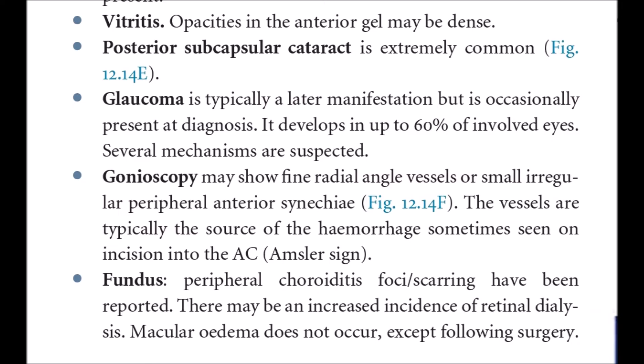Vitreous opacities in the anterior gel may be dense. Posterior subcapsular cataract is extremely common. Glaucoma is typically a later manifestation but is occasionally present at diagnosis, developing in up to 60% of involved eyes, with several mechanisms suspected. Gonioscopy may show fine radial angle vessels or small irregular peripheral anterior synechiae. These vessels are typically the source of hemorrhage sometimes seen on incision into the anterior chamber, called the Amsler sign.